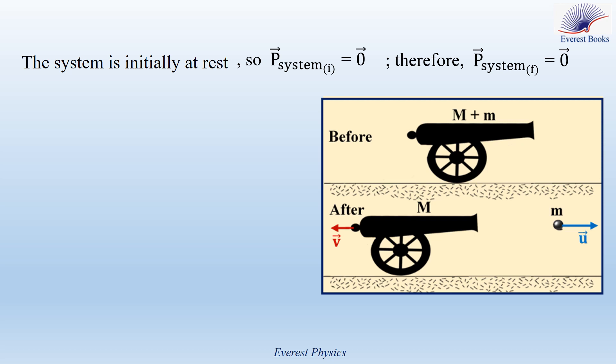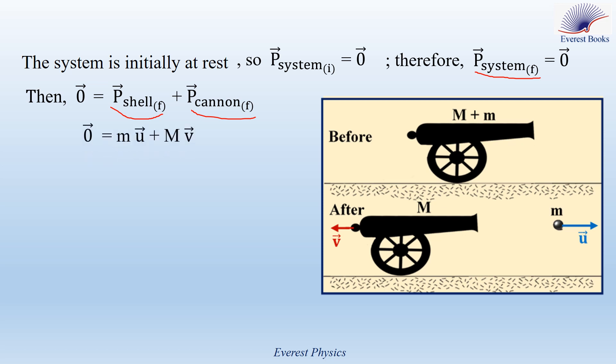The system is composed of the shell and the cannon. So P_system after ejection can be written as P_shell plus P_cannon. P_shell is the linear momentum of the shell, and P_cannon is the linear momentum of the cannon just after ejection. P_shell equals small m times U, where small m is the mass of the shell and U is the velocity of the shell. P_cannon equals capital M times V, where capital M is the mass of the cannon and V is the velocity of the cannon just after ejection. Rearranging, the velocity of the cannon V equals minus (m/M) times the velocity of the shell U.